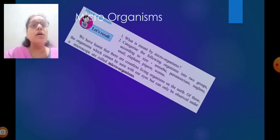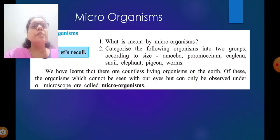Microorganisms. What is meant by microorganisms? Categorize the following organisms into two groups according to their size: amoeba, paramecia, ciliates, euglenoids - very, very minute, able to see; and snail, elephant, pigeon, worms - very big. We have learned that there are countless living organisms on the earth. Of these, the organisms which cannot be seen with our eyes but can only be observed under a microscope are called microorganisms. Micro means very small.